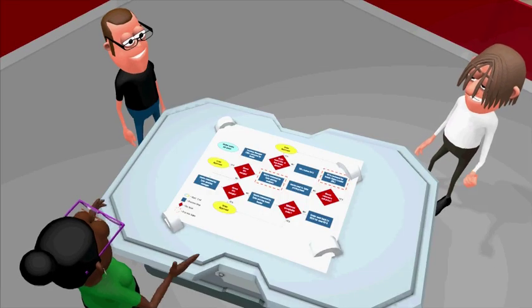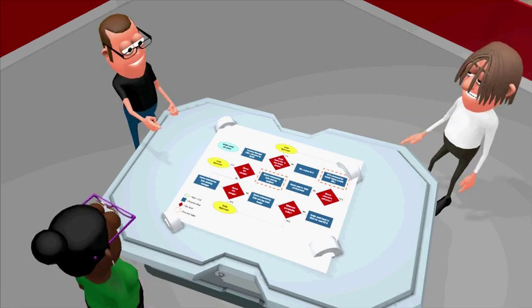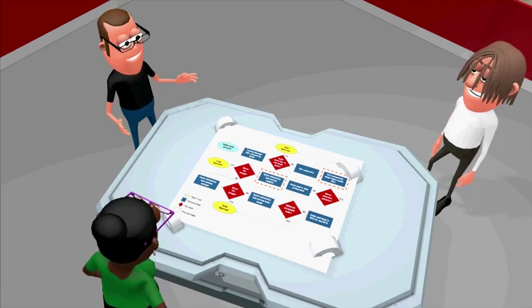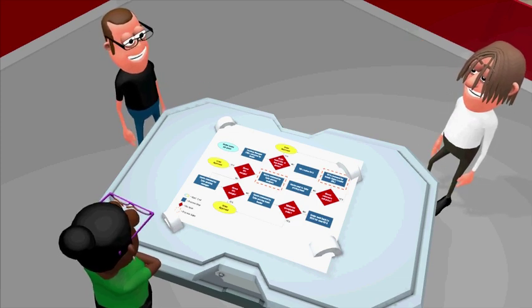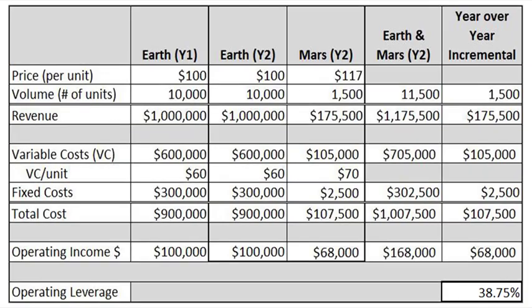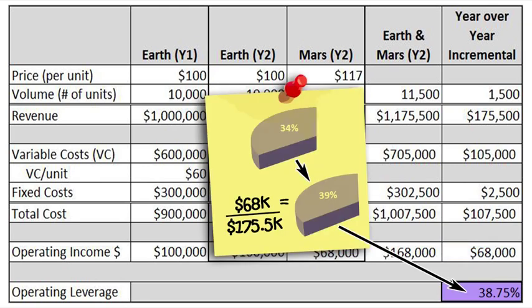Still not reaching our target operating leverage percentage, the team identifies other improvement opportunities. Using value stream mapping, our team reduces fixed costs by uncovering process changes that apply back-office lean methodologies to improve quote-to-cash cycle time. How does this fixed cost reduction affect operating leverage? This cost reduction allows the business to reduce earlier incremental investments in fixed costs and increase operating income dollars to $68,000. Operating leverage is now 38.75%, approaching our target of 45%.